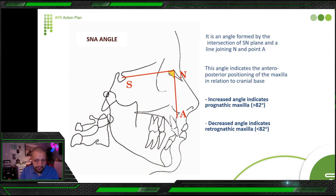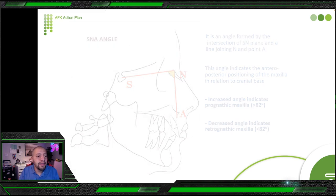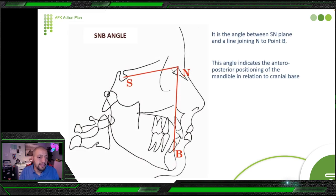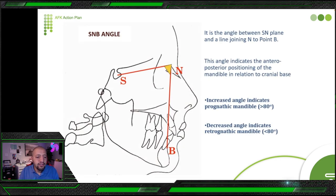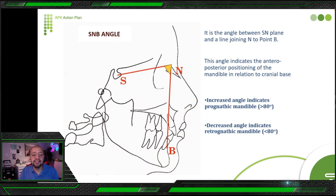SNB is the same as SNA but point B is the most convex point in the mandible. This angle indicates the anteroposterior positioning of the mandible relative to the cranial base. An angle greater than 80° indicates a prognathic mandible; less than 80° indicates a retrognathic mandible.